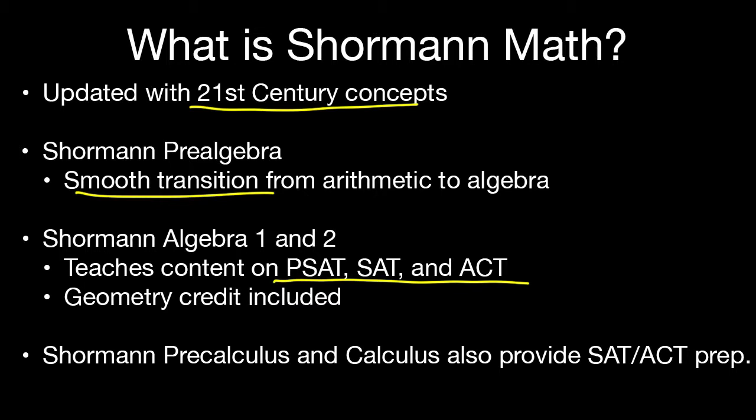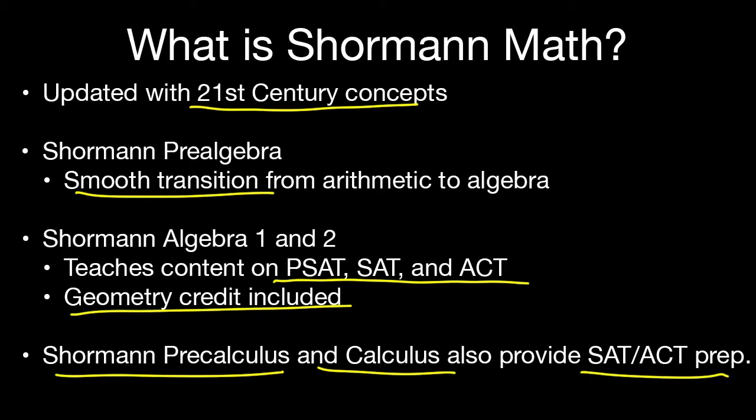Because Shorman Algebra 1 and 2 are integrated with geometry, a geometry credit is included when you complete both. And just like a language, when you get to Shorman Pre-Calculus and Calculus, you'll still be doing some algebra and geometry from Algebra 1 and 2. Students have told me these courses have helped them on the SAT and ACT. Completing Shorman Algebra 1 and 2 will also prepare you for the CLEP College Algebra and CLEP College Mathematics exams to potentially earn college credit while in high school.